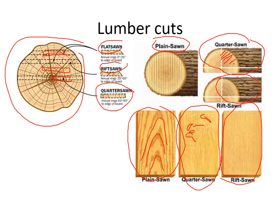A quarter sawn board shows very straight growth rings on the face. Those squiggly, wormy, strange patterns are the medullary rays, often called fleck. In white oak, which is pictured here, it's really quite attractive. Plain sawn wood is less expensive; quarter sawn and rift sawn are more expensive because of the waste produced — you get very little usable wood from the quartering process compared to plain sawn.